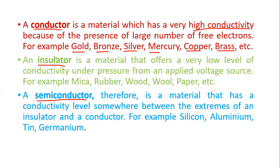An insulator means it doesn't allow current to flow. It has a very low level of conductivity because at absolute temperature it has no free electrons. If there are no free electrons, conduction of current will not take place — that's why it is called an insulator. It insulates between two kinds of things. Examples of insulators are mica, rubber, wood, wool, paper, etc. In such materials there will be no flow of electricity.